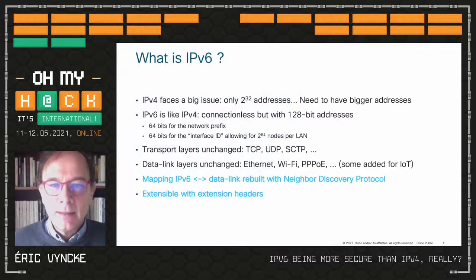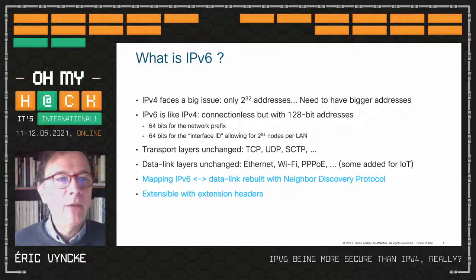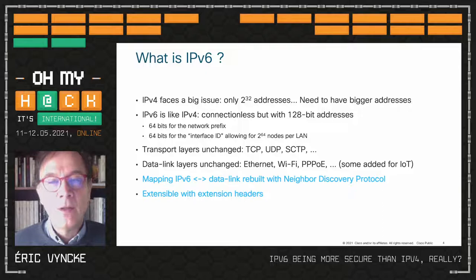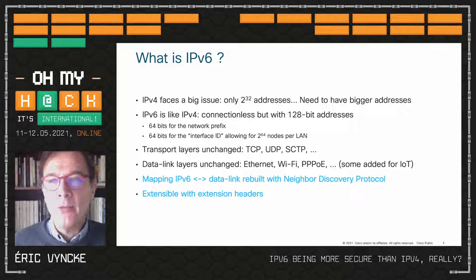This slide summarizes the high-level message about what IPv6 is. You remember IPv4, still used mostly everywhere, has an issue: 32 bits of addresses, meaning 2 to the power of 32, about four billion. We are seven billion on Earth and obviously we need more than one IPv4 address per person — your watch, tablet, phone, laptop and so on.